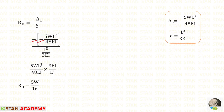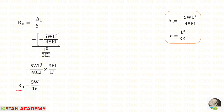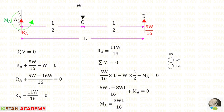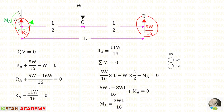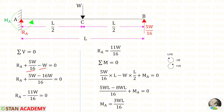Applying the formula: negative times negative gives positive. We multiply and cancel L³ and EI terms. 3 divided by 48 gives 16, so finally Rb equals 5W upon 16. Now applying sigma V = 0 to find Ra: Ra and Rb act upward (positive) and W acts downward (negative). Taking LCM of 16 gives 16W, so Ra equals 11W upon 16.